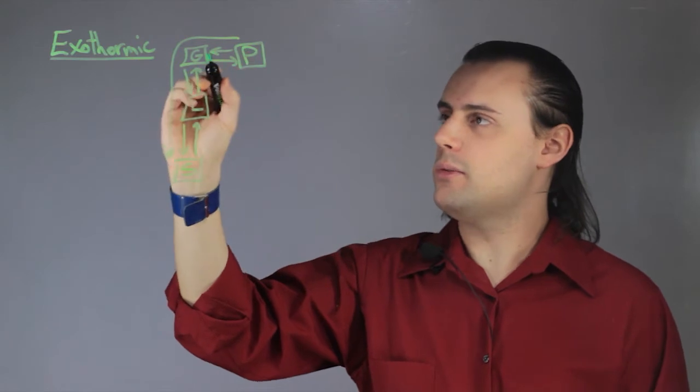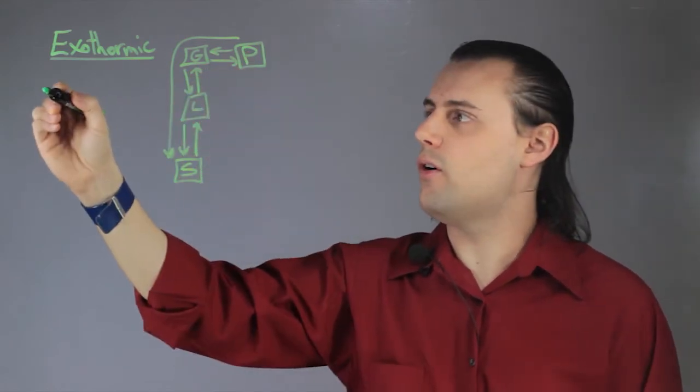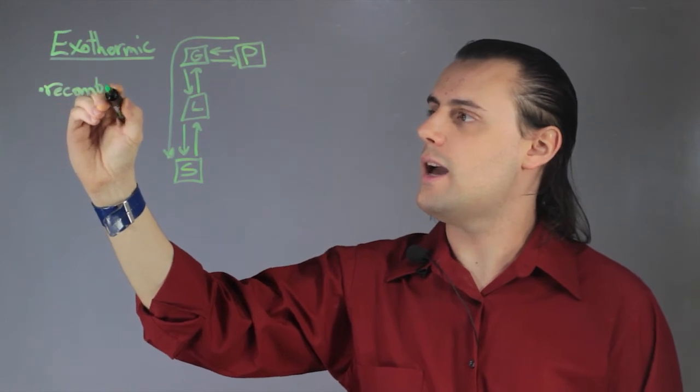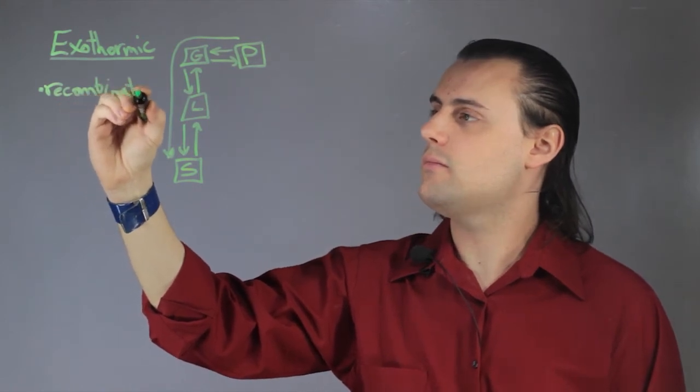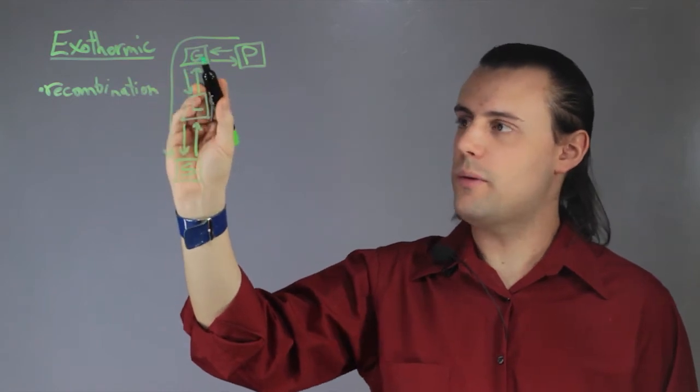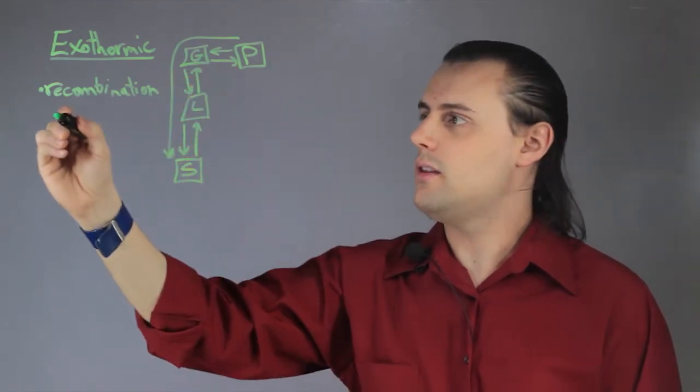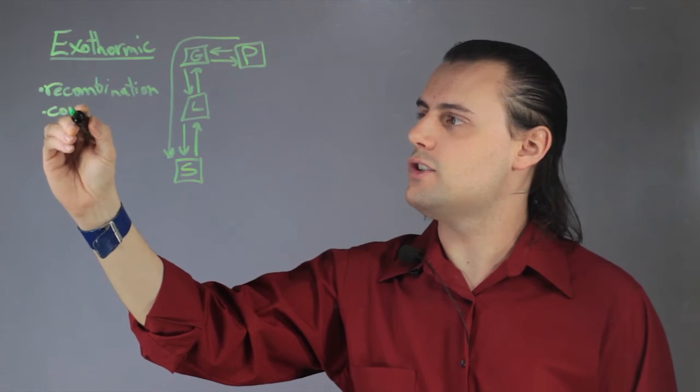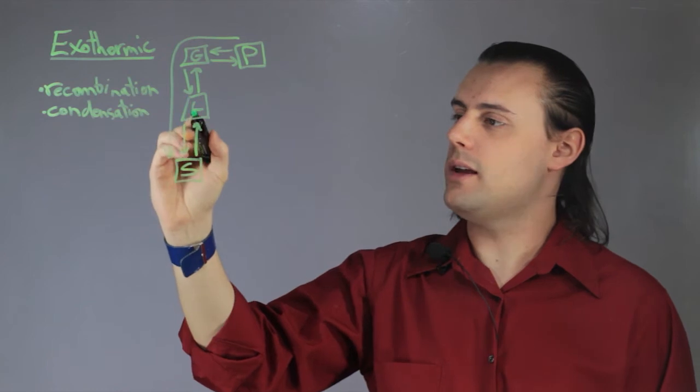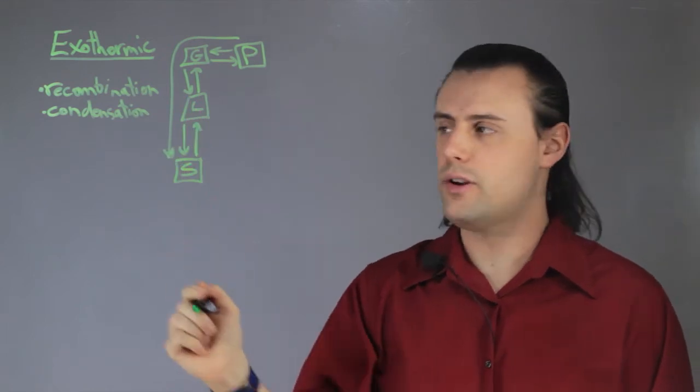Going from a plasma state to a gas state would involve ionic recombination of the atoms. That would be an example. Another example would be going from a gas to a liquid. This is known as condensation. And finally, going from a liquid to a solid is known as freezing.